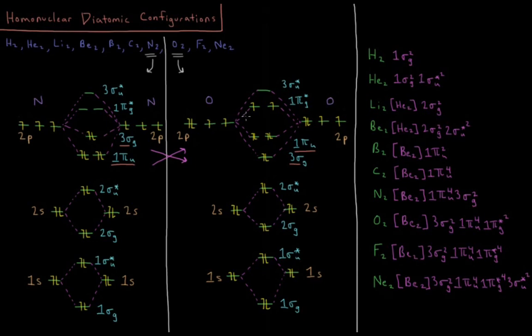And lastly, for neon, we add the final electrons filling up the 3sσg for this final electron configuration of diatomic neon.